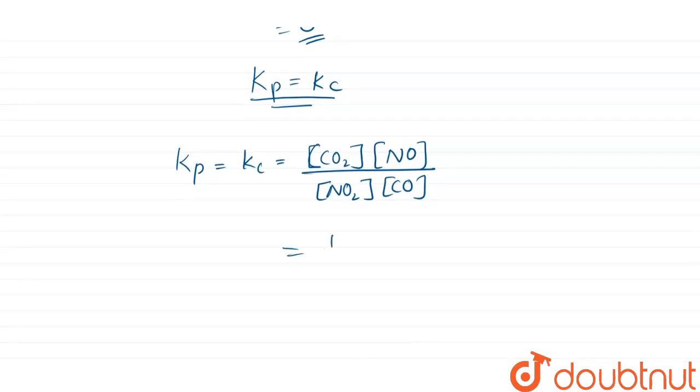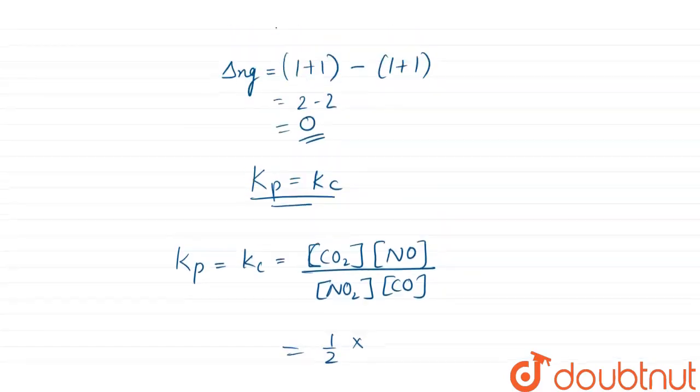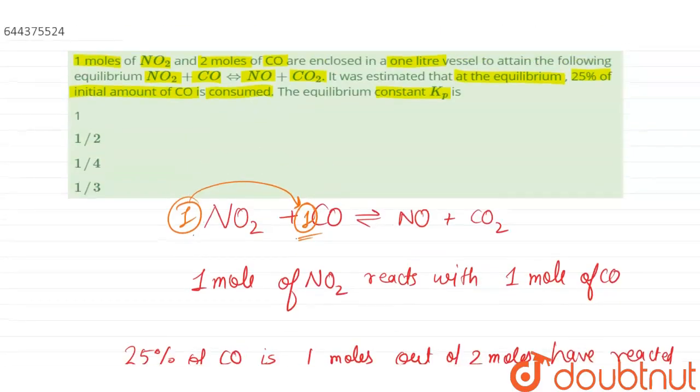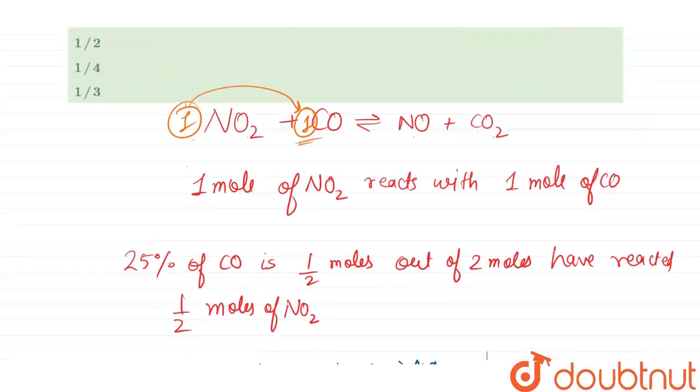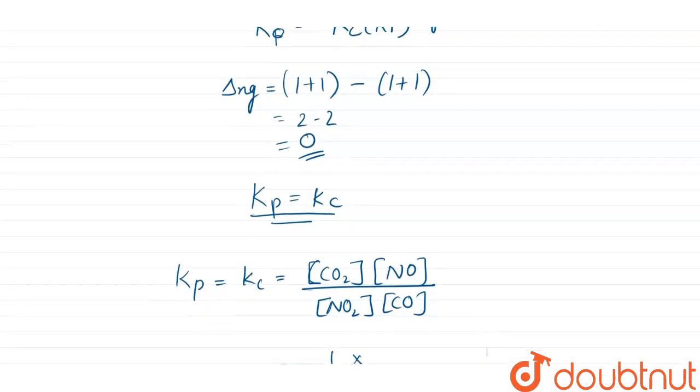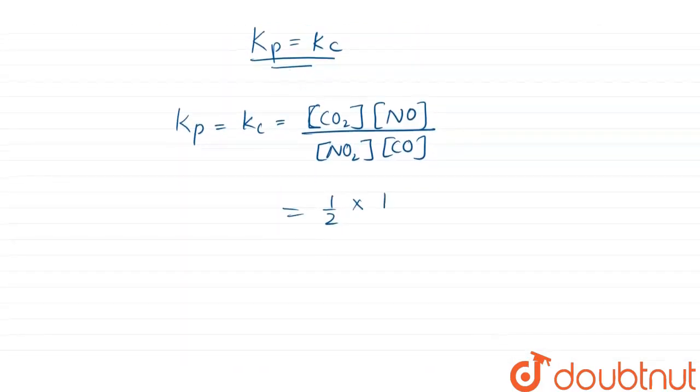We know that concentration of CO2 and NO is 0.5 because, as you can see, if 0.5 mole of NO2 reacts with 0.5 mole of CO, it will form 0.5 mole of NO and 0.5 mole of CO2. So this will be (1/2) × (1/2), and NO2 will be 1/2, and CO at equilibrium will be 3/2.